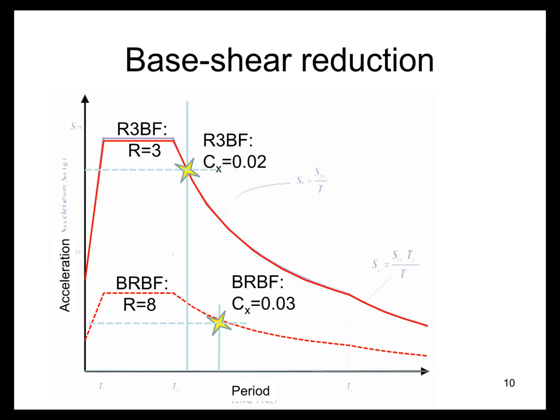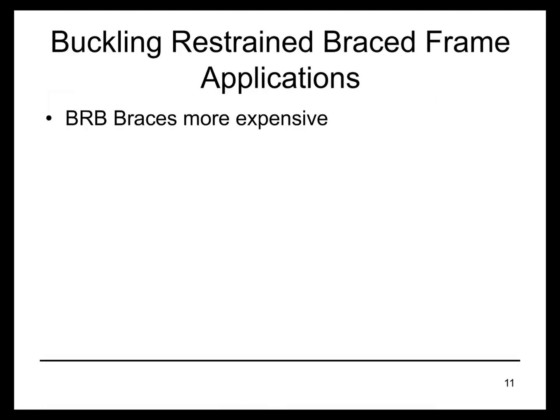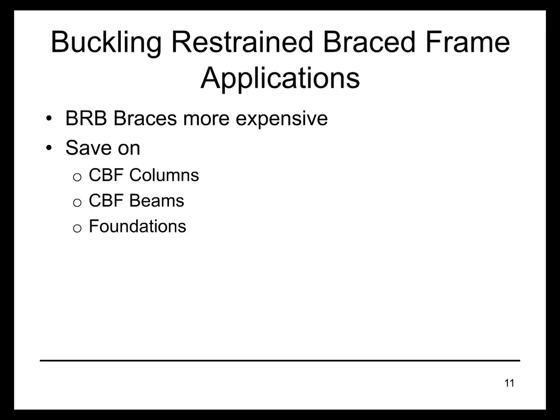Comparing to the R-equals-3 system, 8 is significantly greater than 3, so the reduction is much more dramatic, along with the period elongation, representing a dramatic drop in base shear. For example, if you're designing a building in Las Vegas, Nevada, in seismic design category C, you might consider R-equals-3 but you might also consider the advantages of the buckling restrained braced frame with R-equals-8 and the longer period, reducing forces on foundations and so on. The braces themselves are more expensive, as they have a number of components assembled together — not just a rolled piece of steel. However, the design forces on columns, beams, and foundations can be significantly less, so a cost comparison should account for these reductions as well.